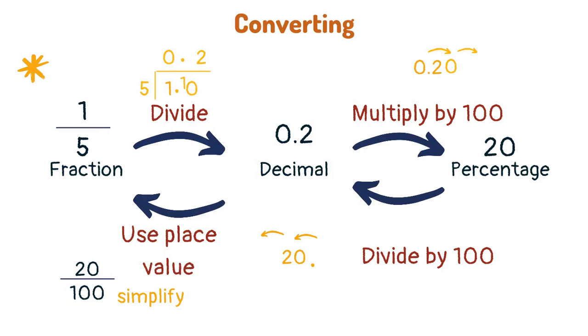To convert from a percentage to a decimal you must divide by 100, and to convert from a decimal to a fraction you will need to use your knowledge of place value.